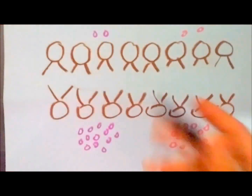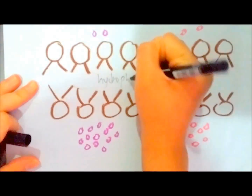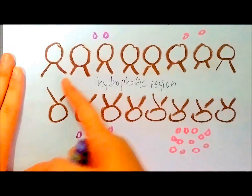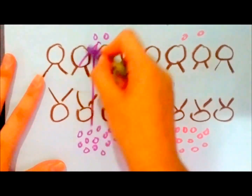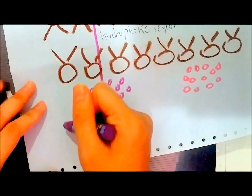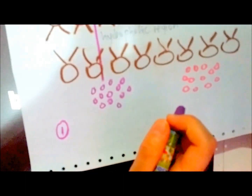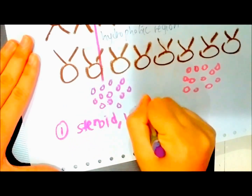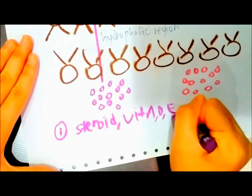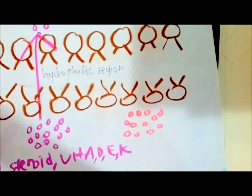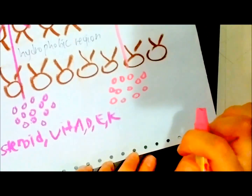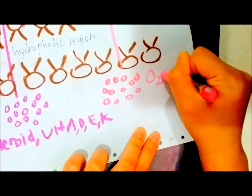The central region of the plasma membrane is known as the hydrophobic region. There are only two types of molecules that can pass through this region. The first one is hydrophobic molecules. The second type is small and uncharged molecules such as oxygen or carbon dioxide.